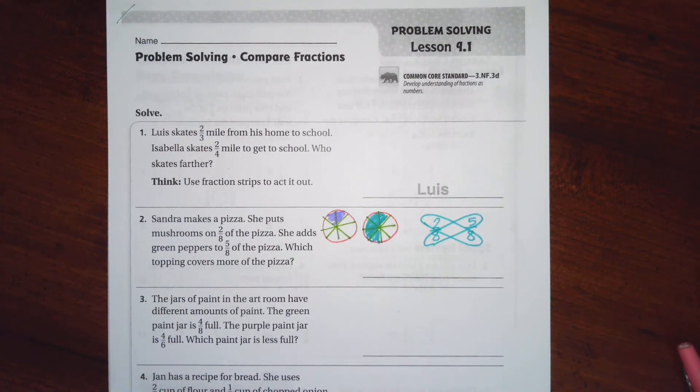Hi guys, welcome to third grade chapter 9, lesson 1. We're going to go ahead and get started with number 2. So we're comparing fractions. When we are comparing fractions, I gave you two ways here that you can see how one is bigger than the other.